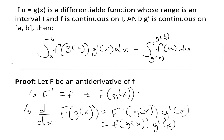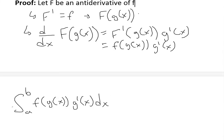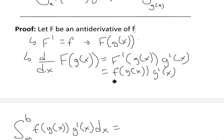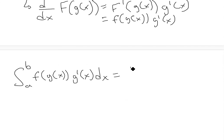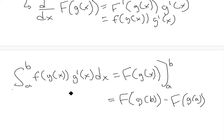Now if we take the integral from a to b of f(g(x))·g′(x) dx, this is exactly the expression we just differentiated. So the antiderivative is F(g(x)), and evaluating from a to b gives F(g(b)) minus F(g(a)).